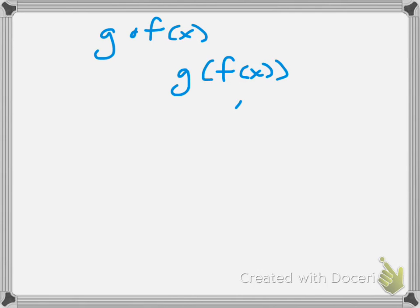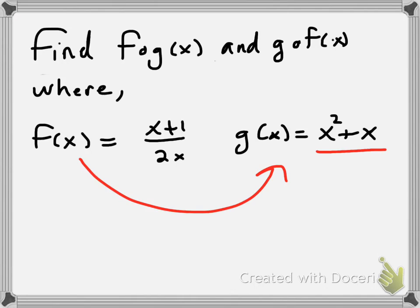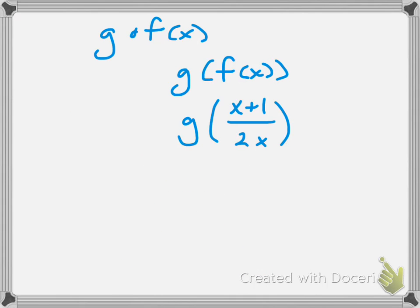So, f of x, x plus 1 over 2x. Really, what I'm doing is saying, what is g of x plus 1 over 2x? And I put that back into my g function. So, wherever I see an x, I put in the expression x plus 1 over 2x.